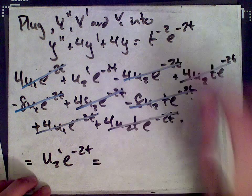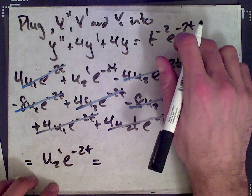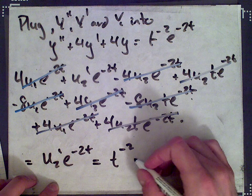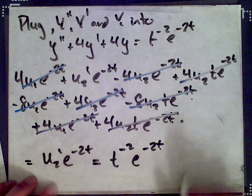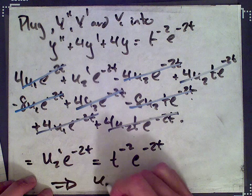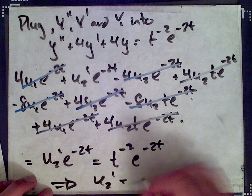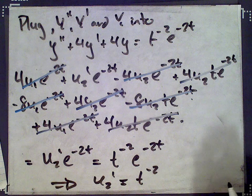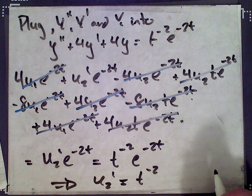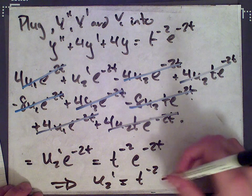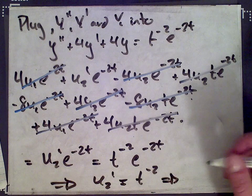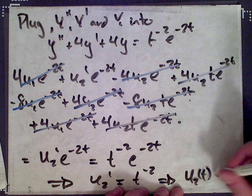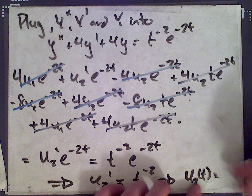That equals the right-hand side of the equation, which is t^{-2}·e^{-2t}. Cancelling e^{-2t} from both sides, we get u2' = t^{-2}. Integrating that with respect to t gives us u2(t) = -1/t.